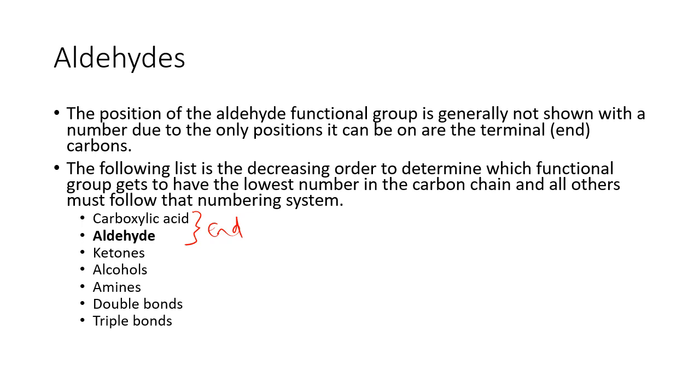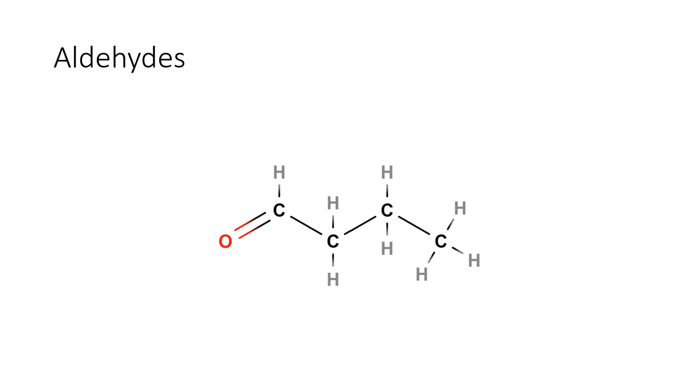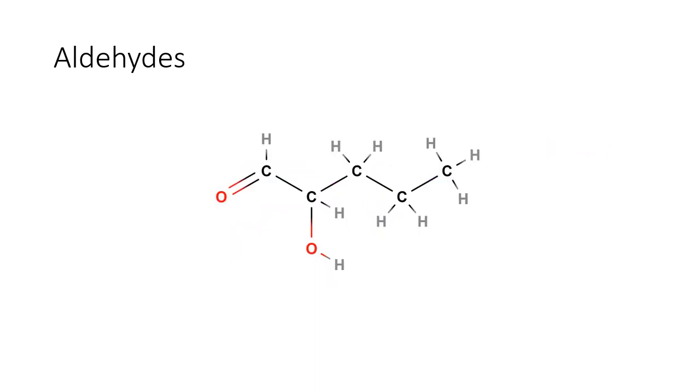So let's have a look at a couple of examples. Aldehydes. This one here, let's see, it's four long, so it's a butane. It's got an aldehyde group there, so therefore it's butanal. Do I need to give the position? No, it's on the end, it's going to be on the one carbon.